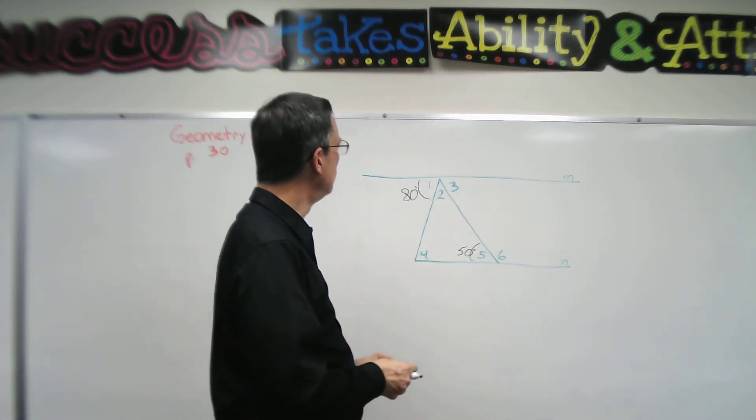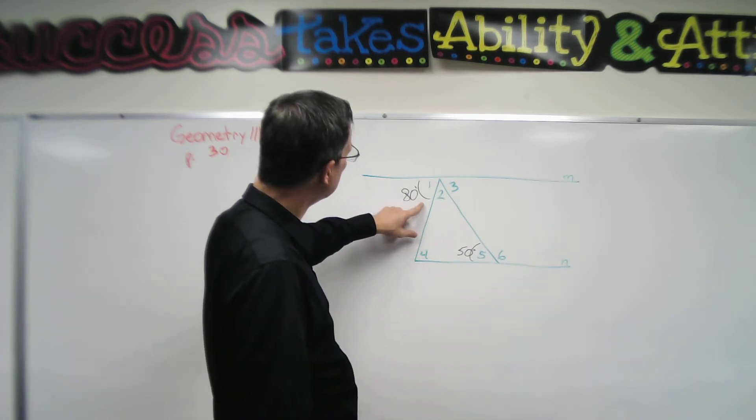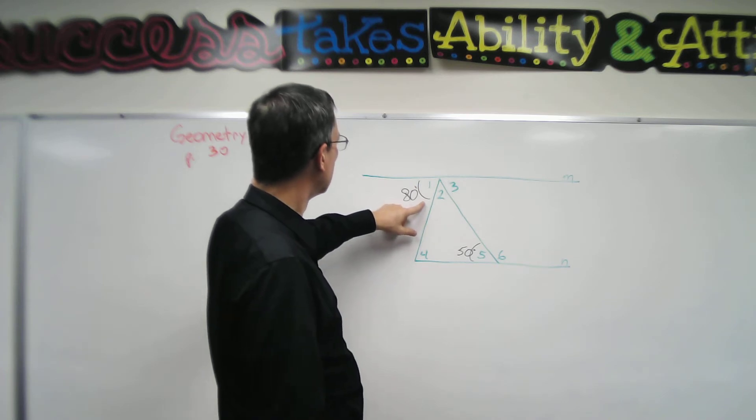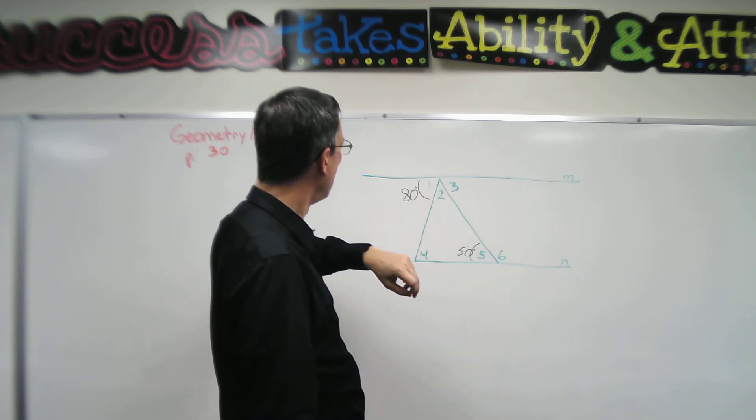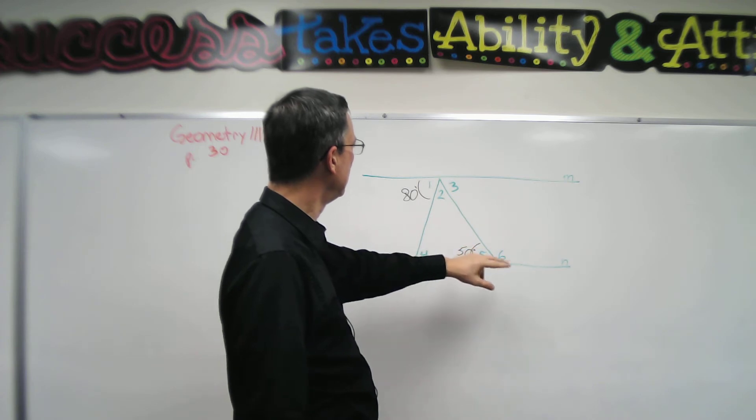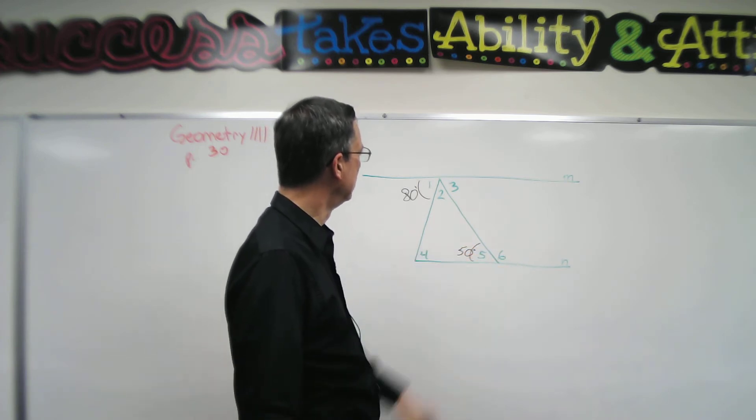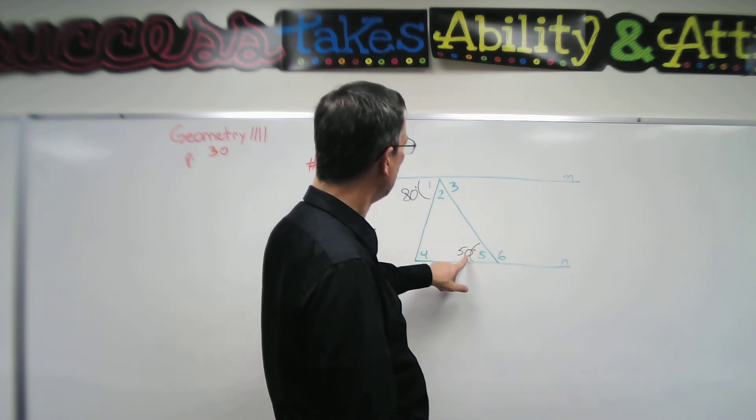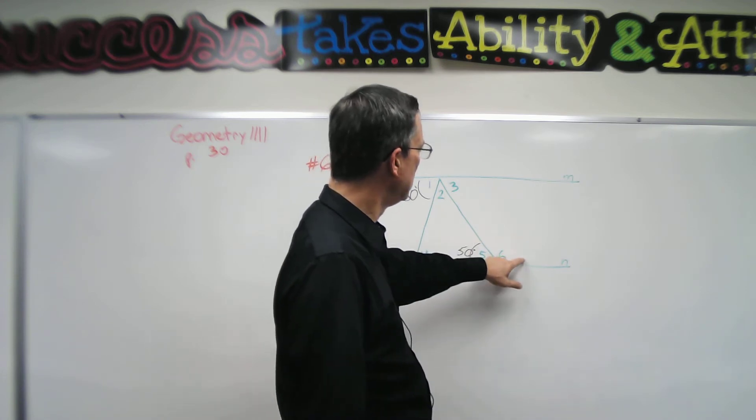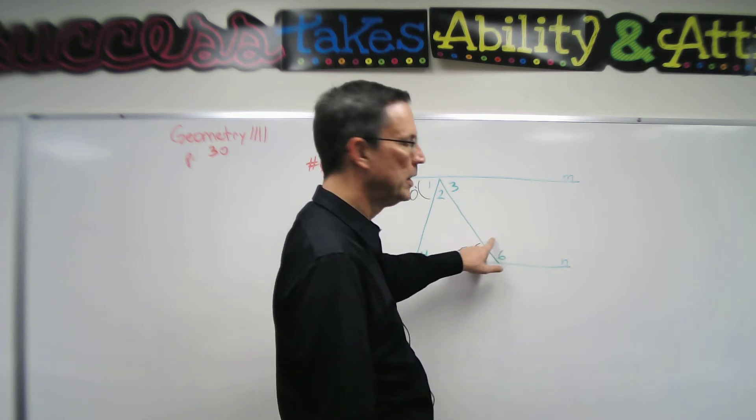So let's see what we know by looking at this. If this is 80 degrees, how many degrees will this angle be? Well, we don't know that yet. We can figure out angle six out here. Let's do that first. This angle is 50 degrees, how many degrees will it equal out here?